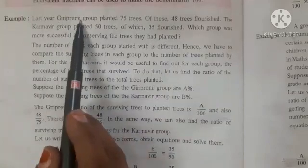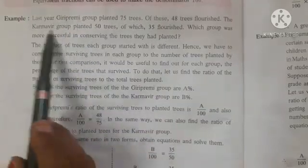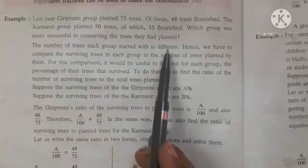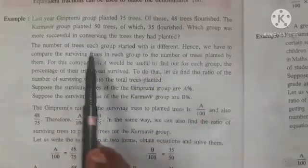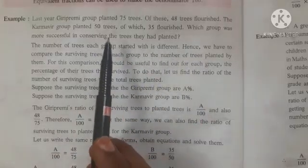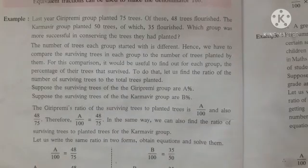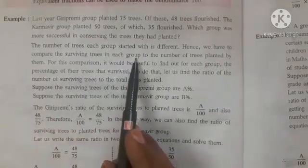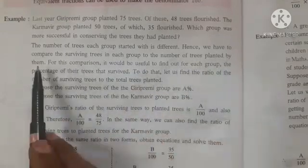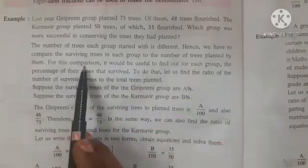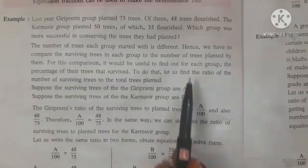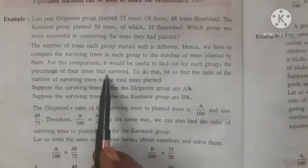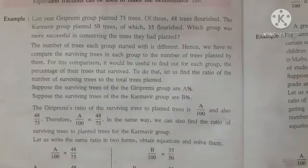Here we have two groups: Gidiprimi and Karmavir. The number of trees each group started with is different — the tree planting is different in both groups. Hence, we have to compare the surviving trees in each group to the number of trees planted by them. For this comparison, it would be useful to find the percentage of trees that survived. We will find the percentage.